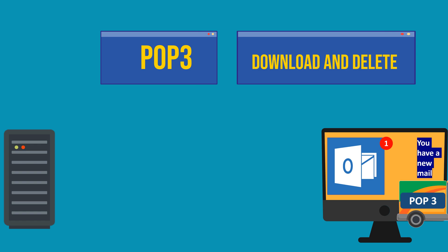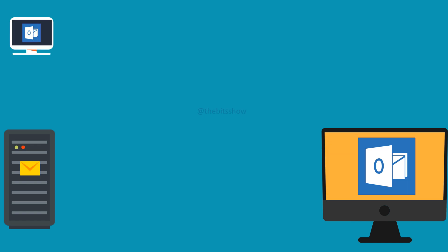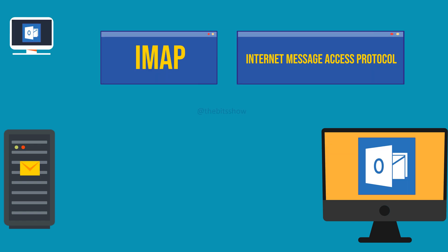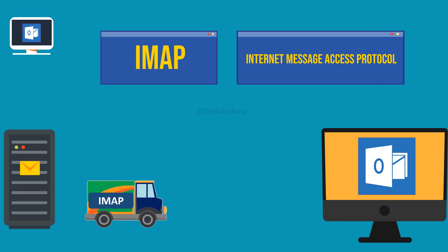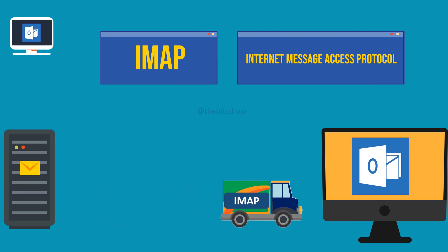Now let's explore IMAP, the Internet Message Access Protocol. Unlike POP3, IMAP keeps your emails stored on the server, enabling access from multiple devices. IMAP synchronizes your mailbox across devices, ensuring changes made on one device reflect across all others. It doesn't download emails by default, but caches them for viewing, requiring an Internet connection to access.